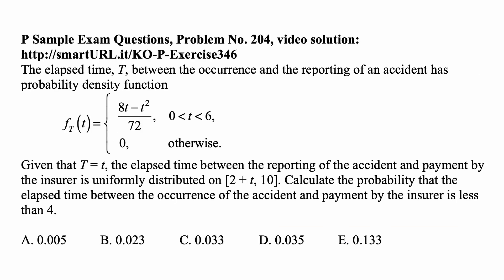Here's a problem for today for Exam P on probability. The lapse time t between the occurrence and the reporting of an accident has probability density function f_t(t) equal to (8t - t²)/72 for t between 0 and 6, and 0 otherwise.